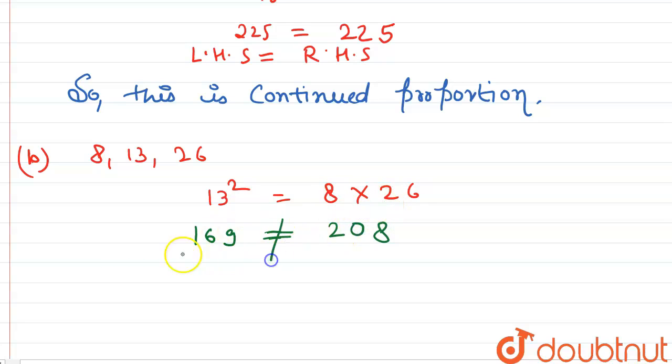Here we see that LHS is not equal to RHS. So we say that these numbers are not in continued proportion.